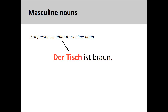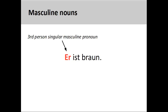German also makes substitutions based on the grammatical gender of the noun. For instance, in the sentence you see on the screen — der Tisch ist braun, the table is brown — the masculine noun Tisch can be replaced by the third person singular masculine personal pronoun, er, he.